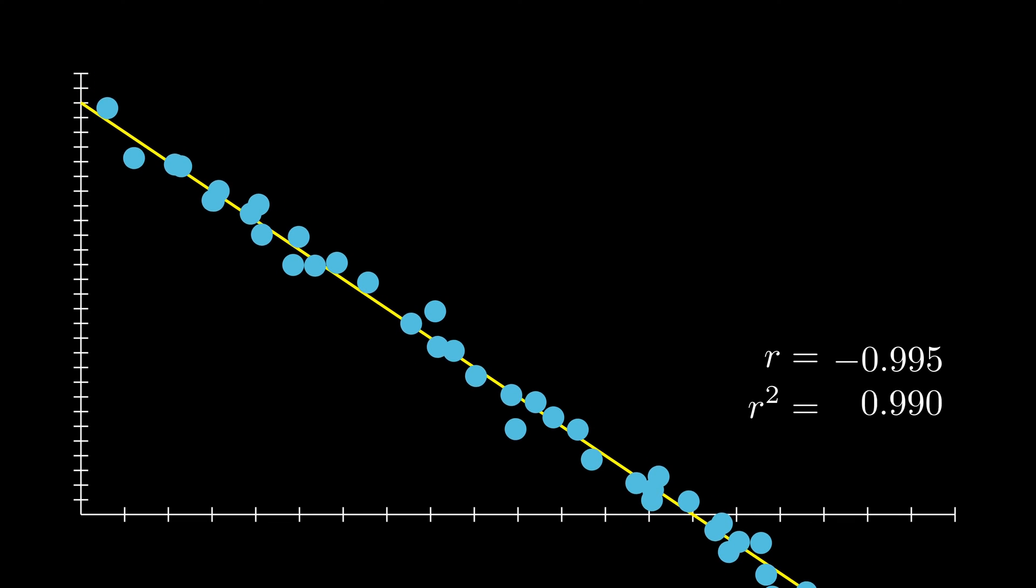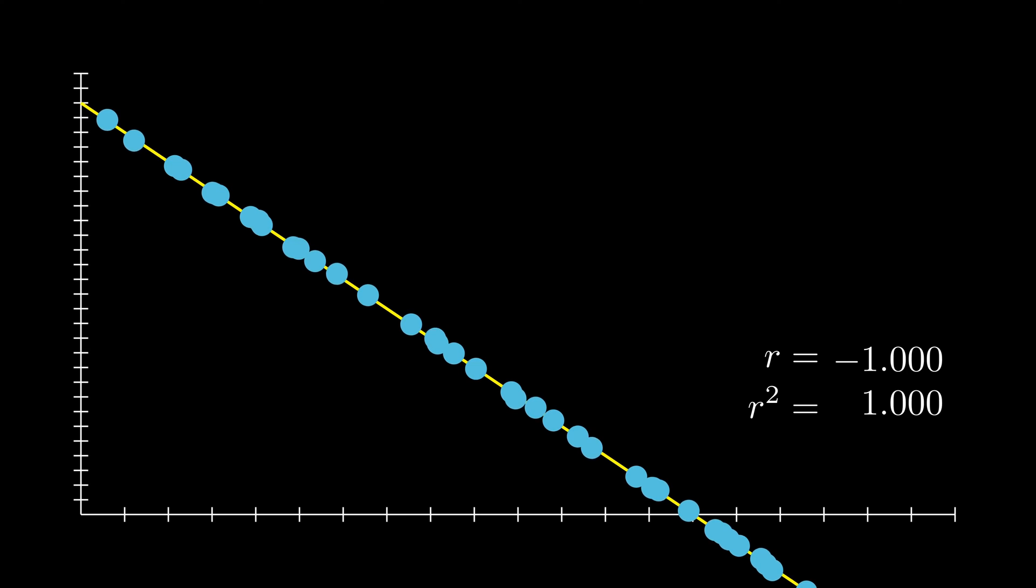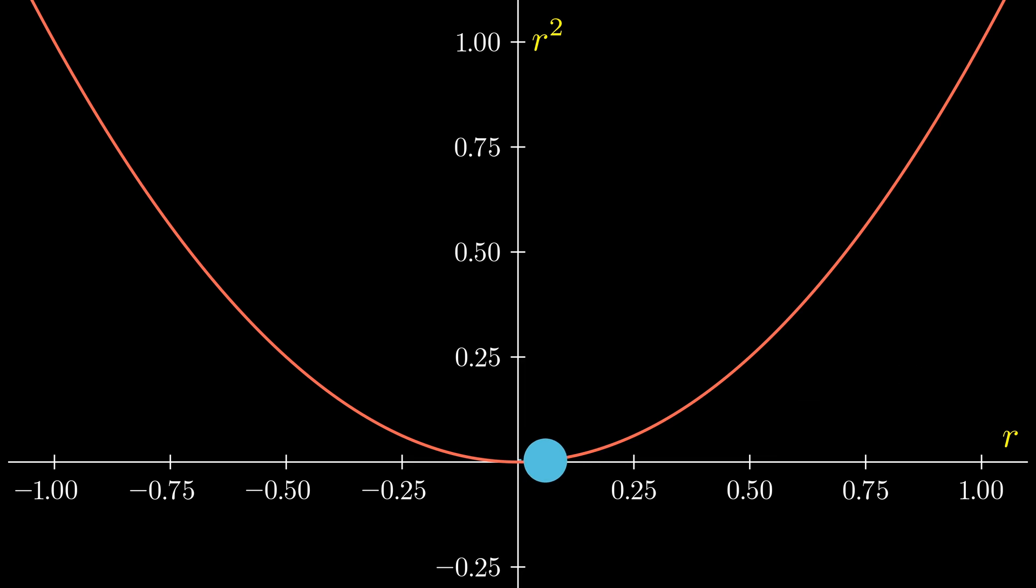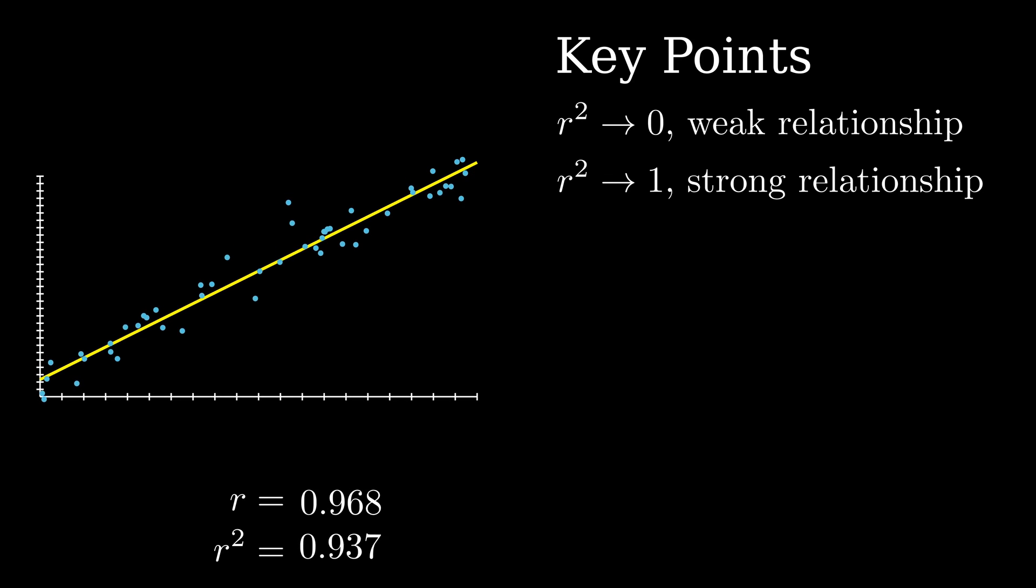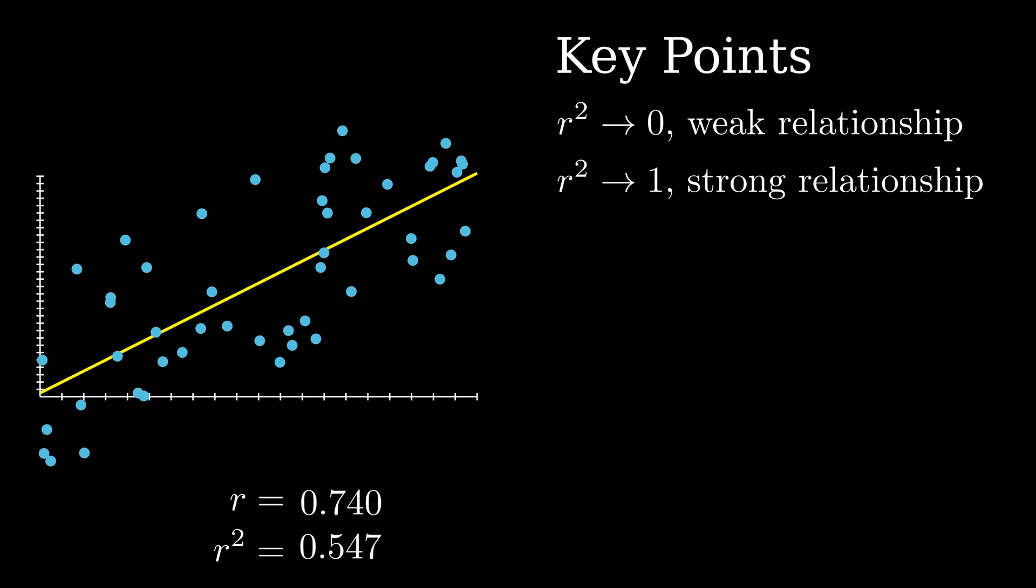Notice that as r approaches negative 1, the r square approaches positive 1. This should not be surprising as when you square a negative number, it will become a positive number. This is useful as the r square is agnostic to the positive or negative nature of the correlation and just establishes if there is a relationship altogether.